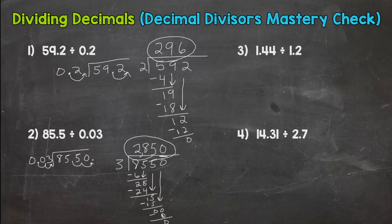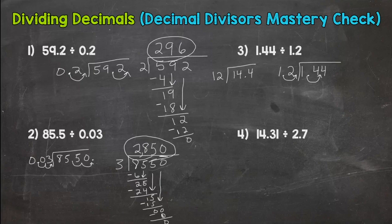Alright number 3. We have 1.44 divided by 1.2. So this one multiply by 10 or move the decimal once. Same thing to the inside. So we get, I'm going to come over here to the left. 14.4 divided by 12. Is my divisor whole? Yes. So I bring my decimal straight up.